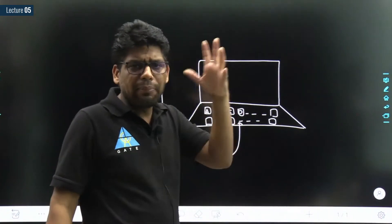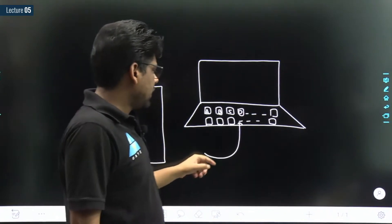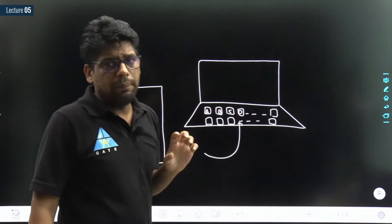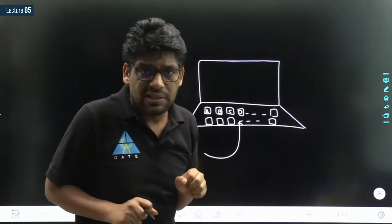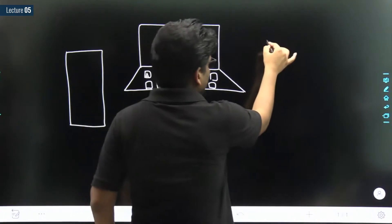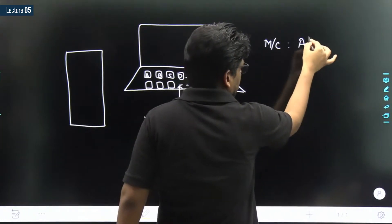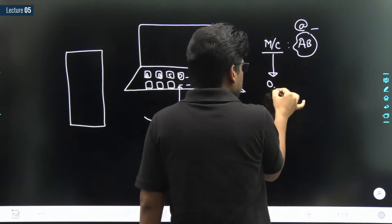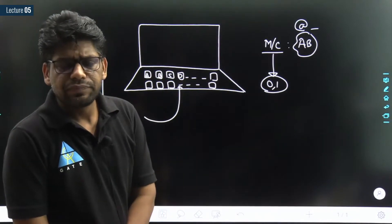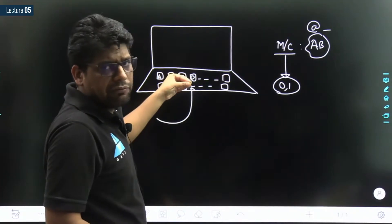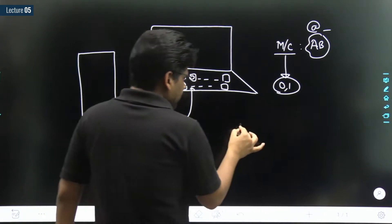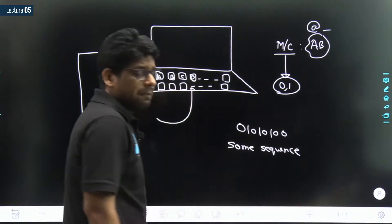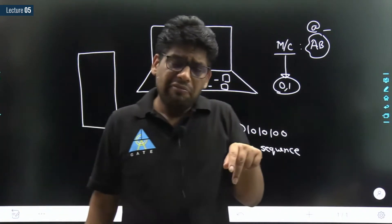There are different keys on this keyboard. The user is providing input from the keyboard, and this input is going into our program. The user is pressing some keys to provide input. But what does a machine understand internally? A machine only understands 0 and 1. That means whatever input the user is providing from the keyboard, for a machine it is nothing but some sequence of 0s and 1s.